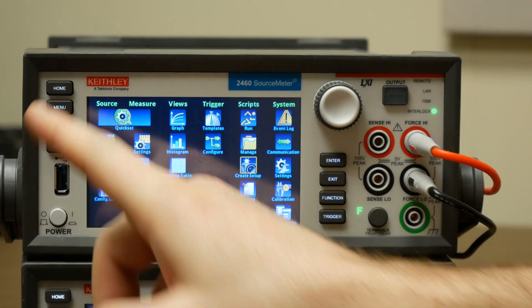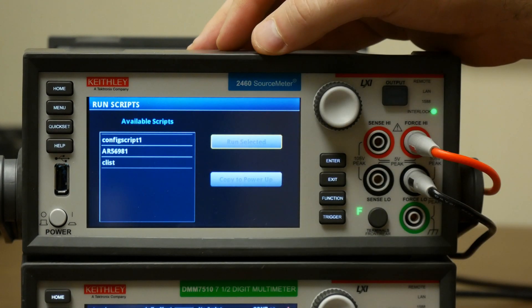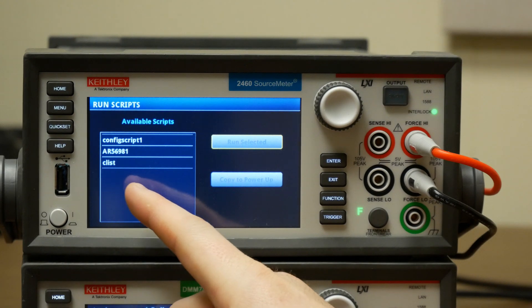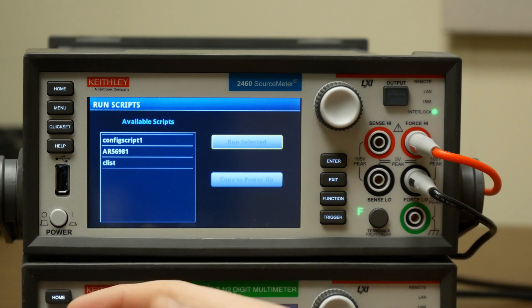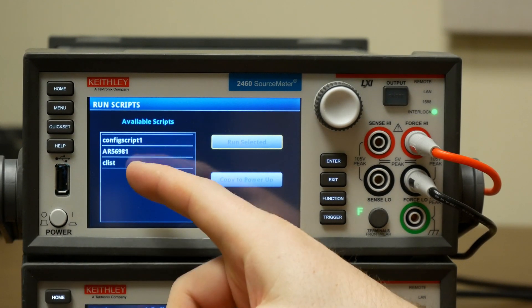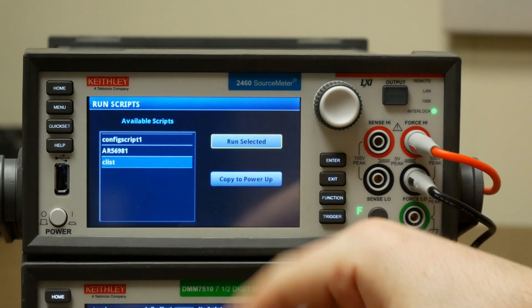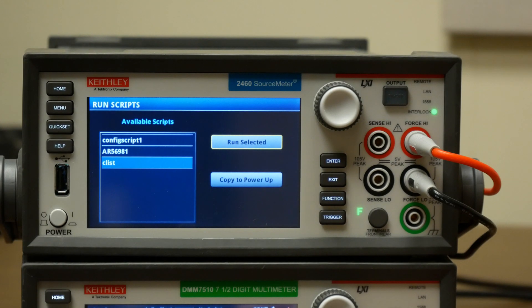And now if we go back to menu and run, we'll see here that we have CList as one of our available scripts. So if you were to turn off the instrument and turn it back on, that will still be there. You would just press CList, run selected, and your configuration lists will come back on to the 2460 SMU.